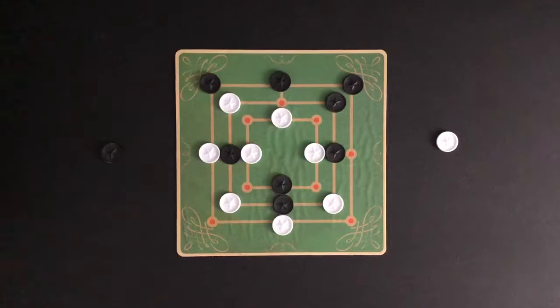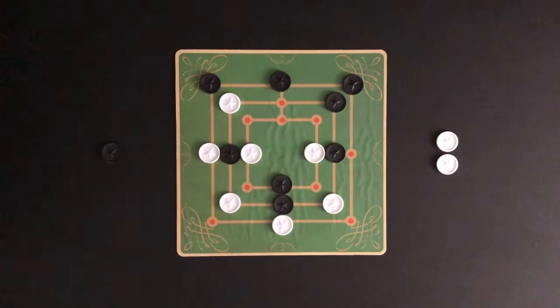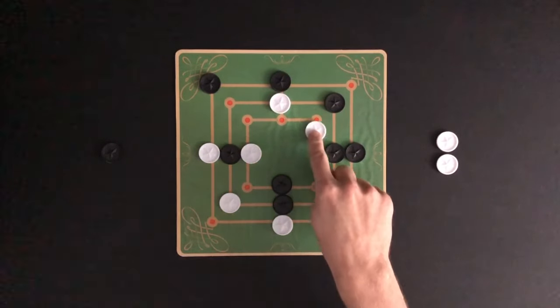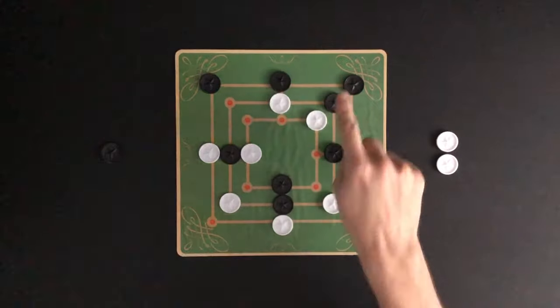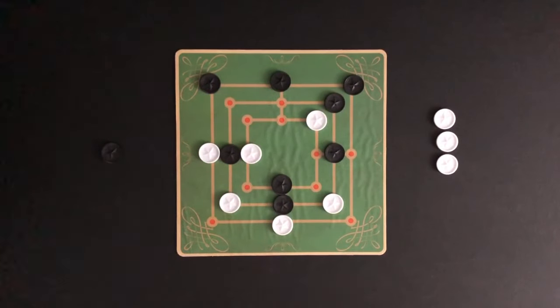Here, black is able to get three in a row and removes one of white's markers from the board. Play returns to white to make a move. Black and white trade moves, then black is again able to make a three in a row. A white marker is removed from the board and play continues.